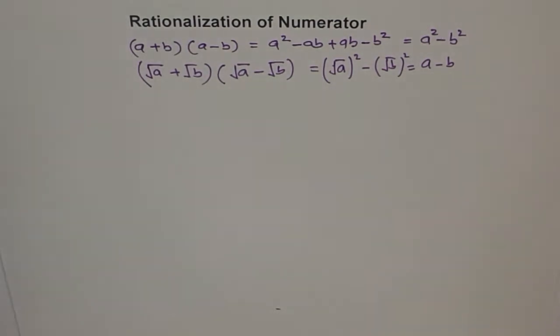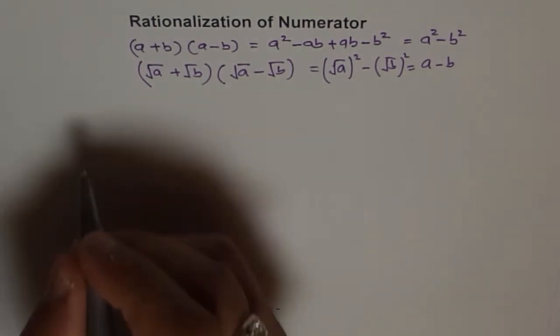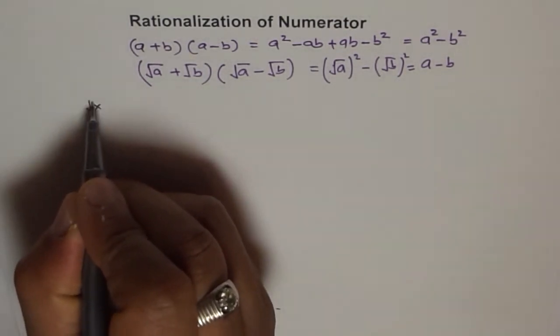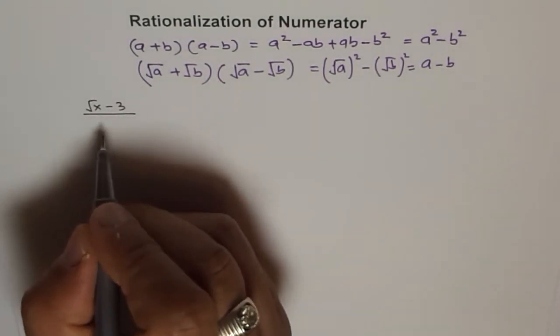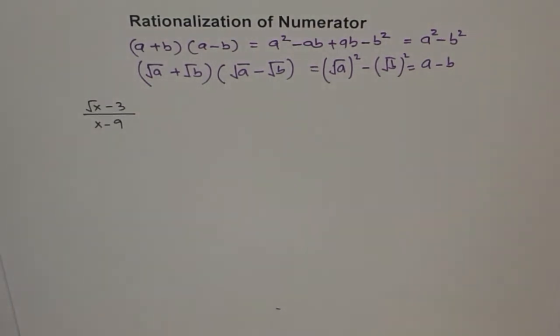Let's take some examples so that you appreciate how easily we can adopt this method and simplify. Let's take a simple example. Let's say we have square root of x minus 3 divided by x minus 9. Now to rationalize it, what will you do?